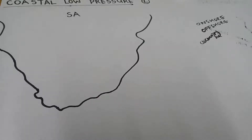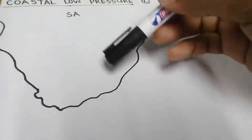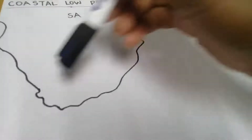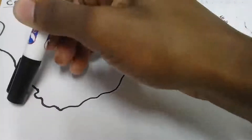Then we have offshore winds. The offshore winds are the winds that blow from the land to the ocean. They blow from the land to the ocean.